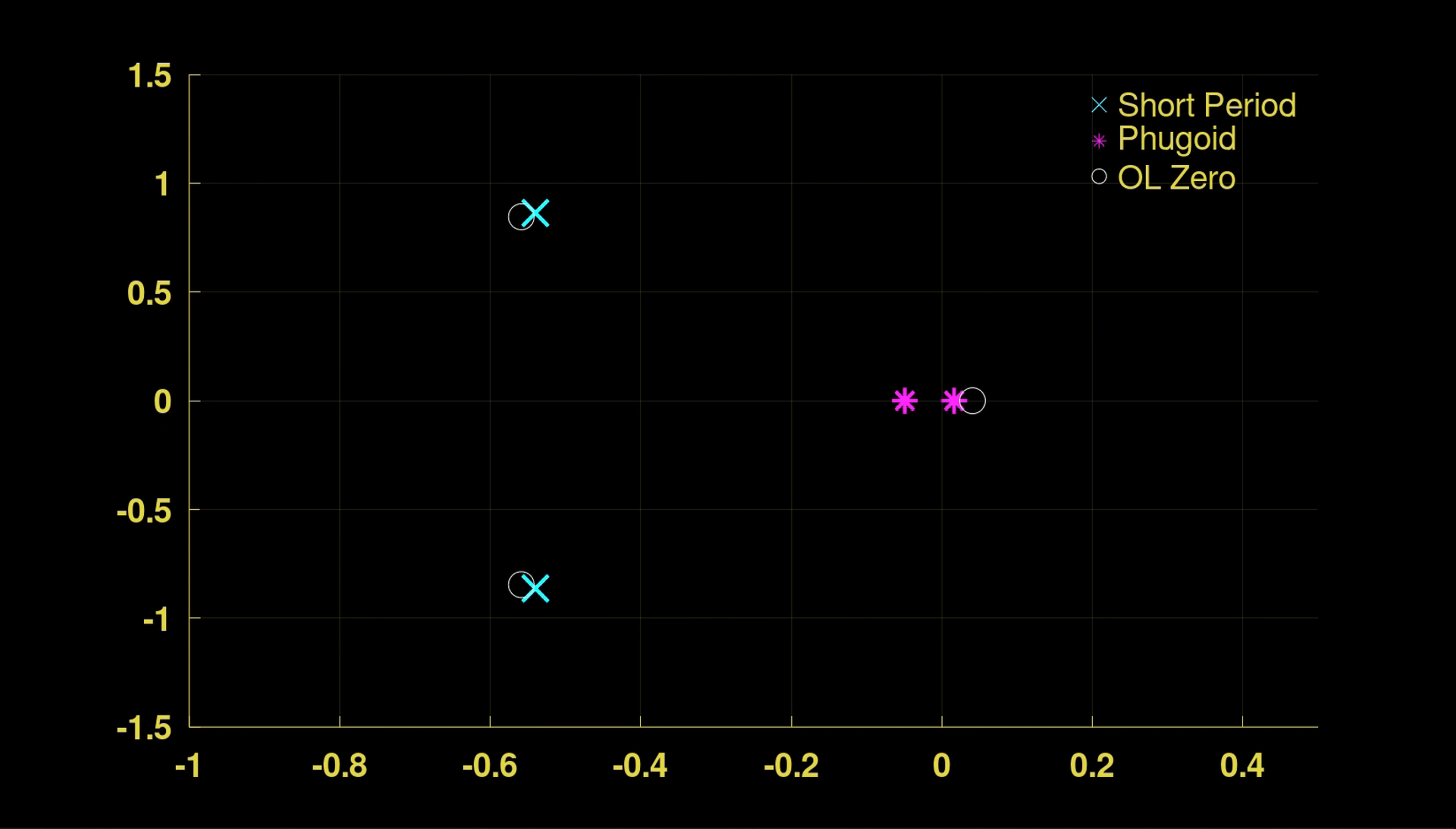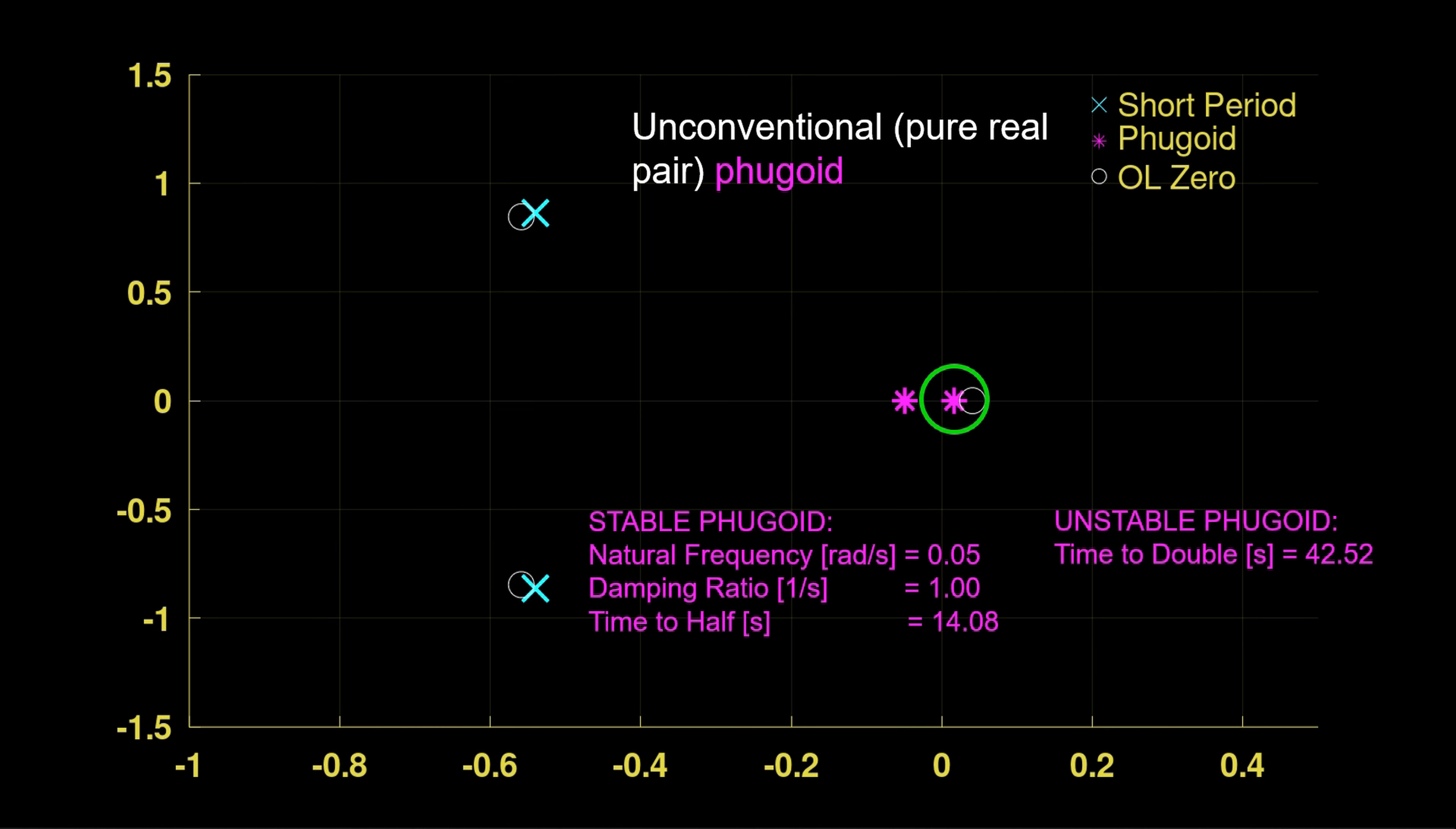The phugoid here is unconventional. In a sense, it does not exhibit oscillation between potential and kinetic energy. This would be associated with a complex pair. But note we have pure real poles. The pitch angle pole in particular is unstable. But the instability is slow, it being near the origin, with a time to double of about 42 and a half seconds. And we would expect this pitch pole as the closed loop system is tuned to approach its nearby open loop zero.